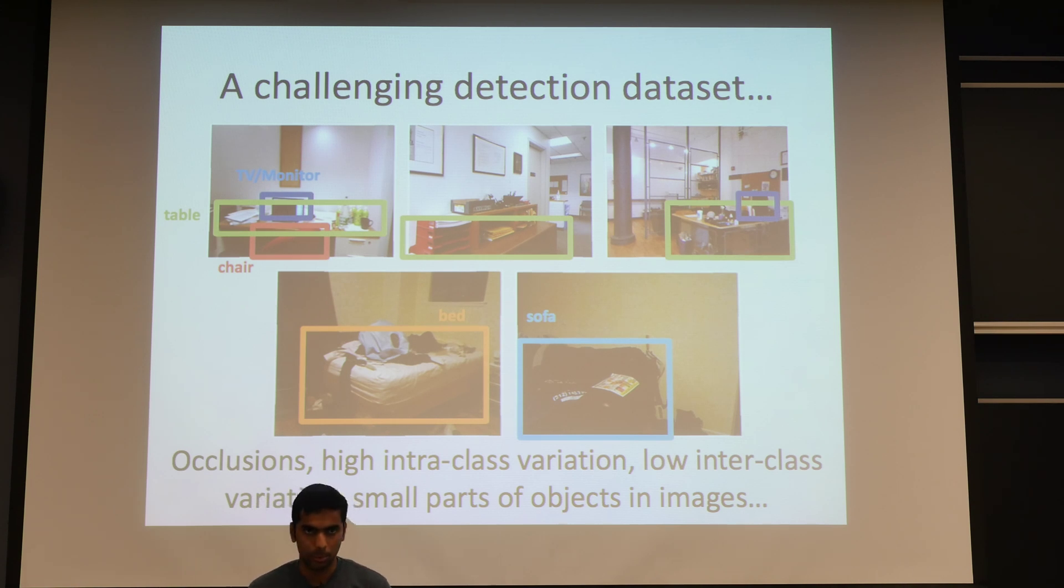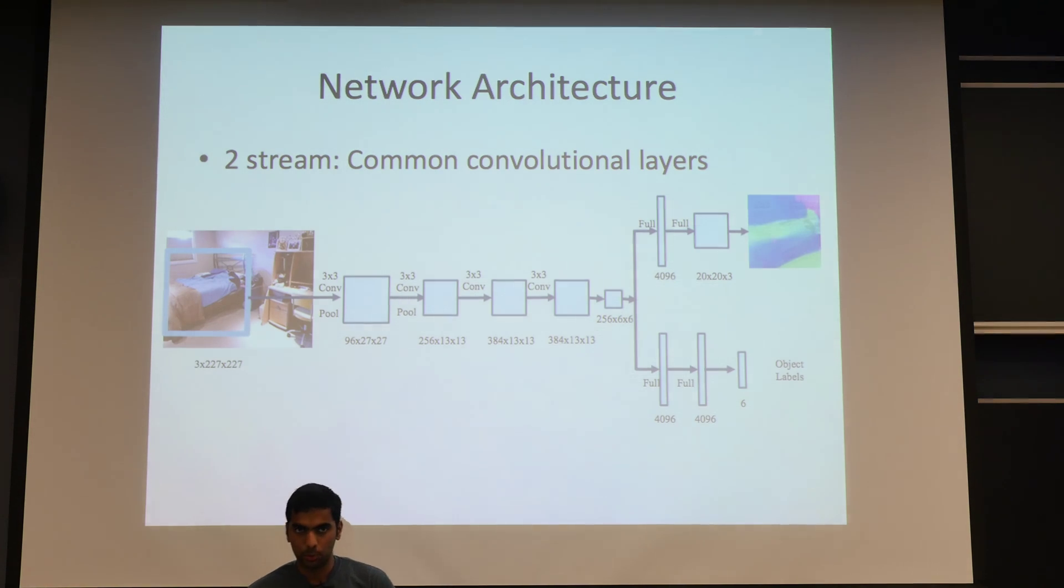This is the network architecture we use. It's based on AlexNet and we added an additional stream, so it has shared convolutional layers and it has separate fully connected layers for both predicting the surface normals and for object labels. We train both streams jointly.